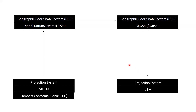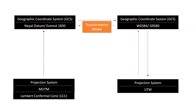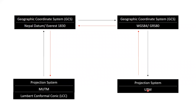To do that, we move from UTM to WGS84, then transform from WGS84 to Nepal Datum. So when we want to move from MUTM to UTM, we must follow this path: MUTM → Nepal Datum → WGS84 → UTM.